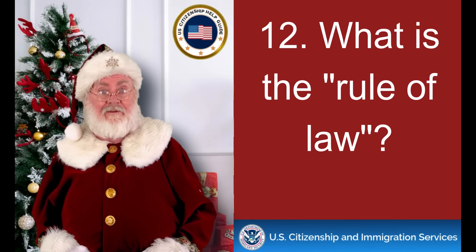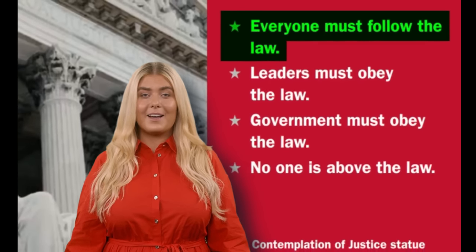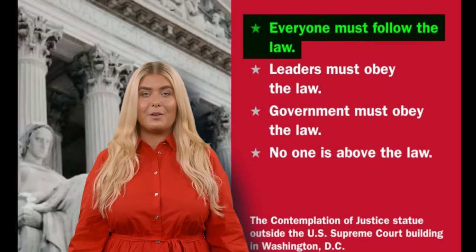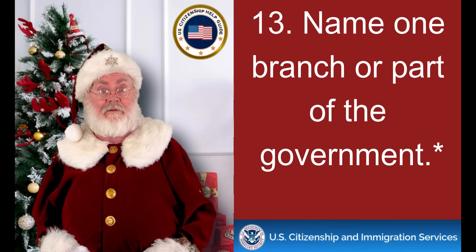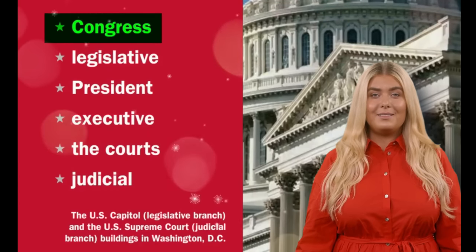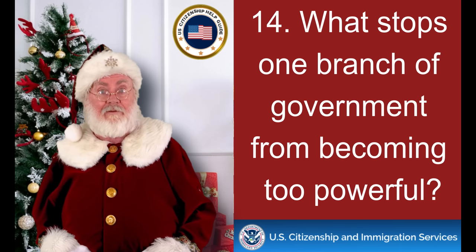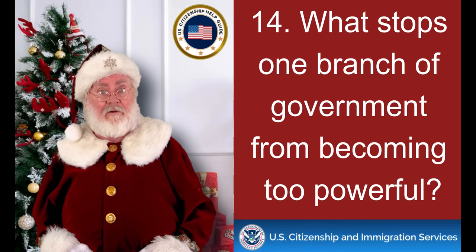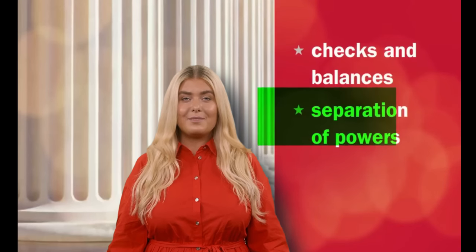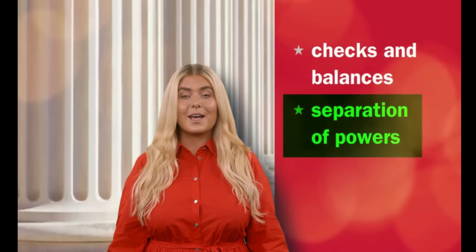What is the rule of law? Everyone must follow the law. Name one branch or part of the government. Congress. What stops one branch of government from becoming too powerful? Separation of powers.